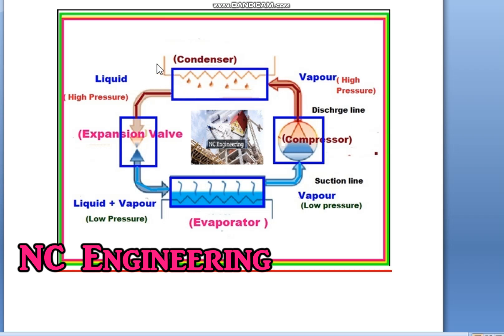After the condenser, the high pressure liquid refrigerant passes through number 3 — the expansion valve or throttling valve — which reduces the pressure abruptly, causing the temperature to drop dramatically. So this high pressure liquid, when it passes through the expansion valve, converts to a mixture of liquid plus vapor at low pressure.